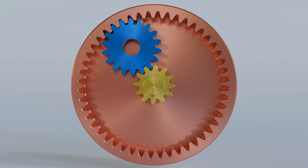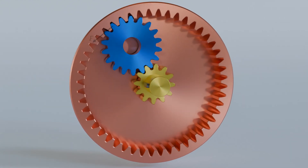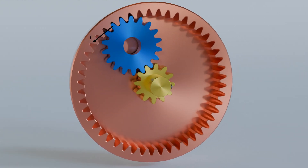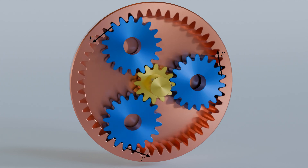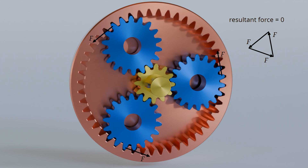A disadvantage of this gearbox is that the output shaft and the input shaft are subjected to bending due to the one-sided flank force of the idler gear. In the animation, F is the force of the idler gear acting on the flank of the ring gear. However, bending stress can be avoided if several intermediate gears are arranged symmetrically so that the flank forces compensate each other in their bending effect. In the case of three idler gears, the drive and output shafts are no longer subjected to bending, but only to torsion.